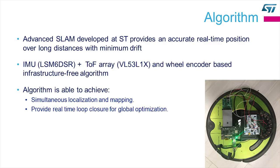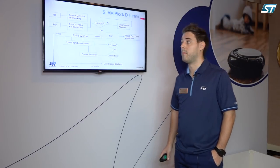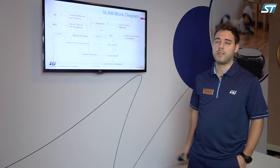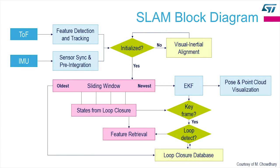It includes, as I said, the IMU, time-of-flight, and wheel encoder based inputs. This is the main SLAM block diagram. We first need to integrate and synchronize the data between the time-of-flight and the IMU. Once the synchronization is completed, the main block of the Extended Kalman filter is working.